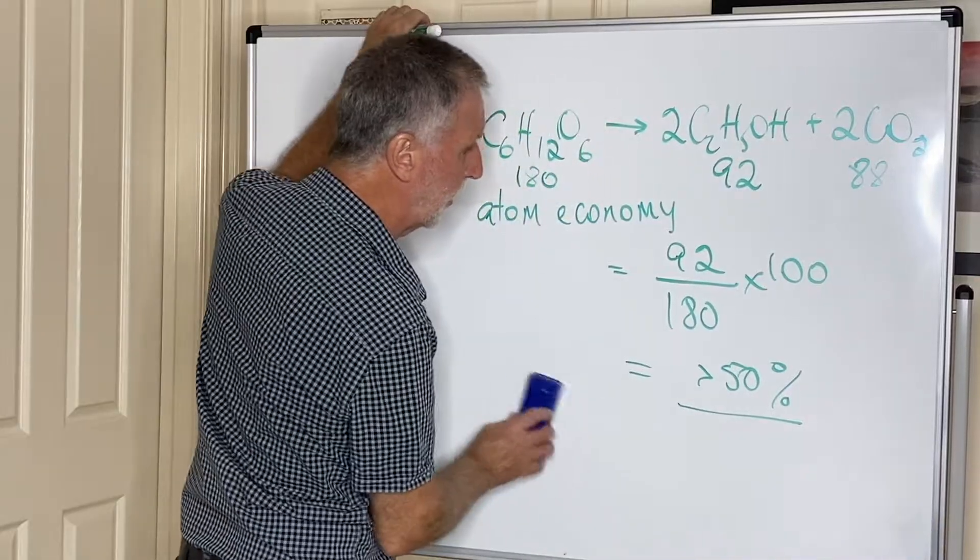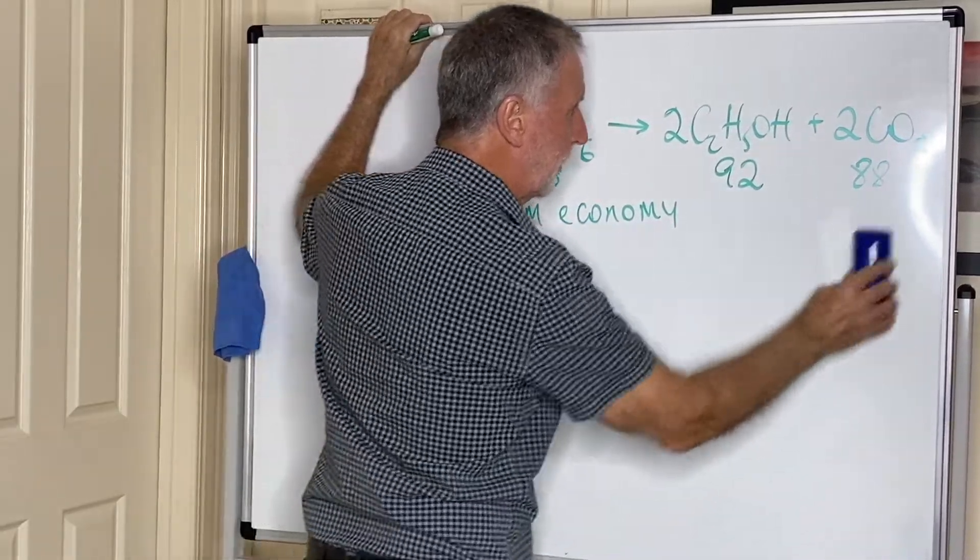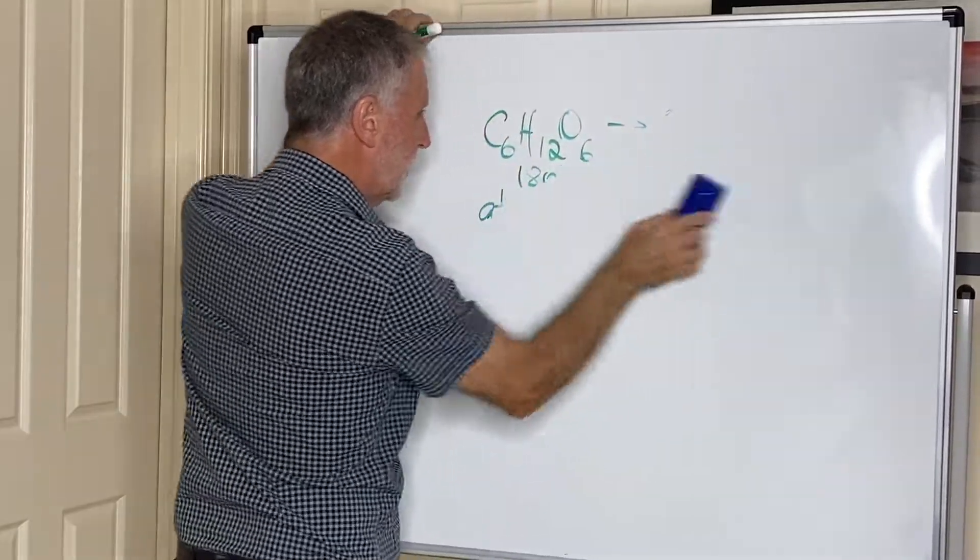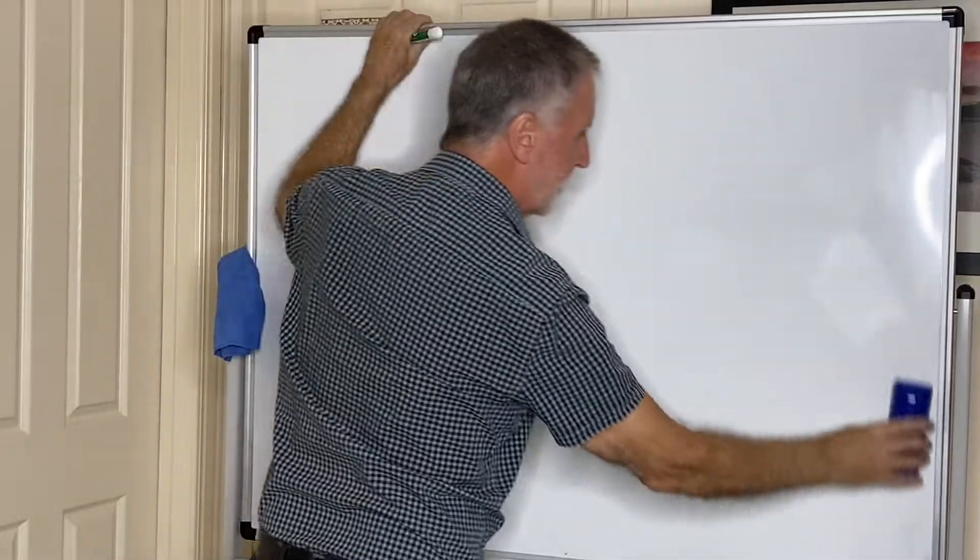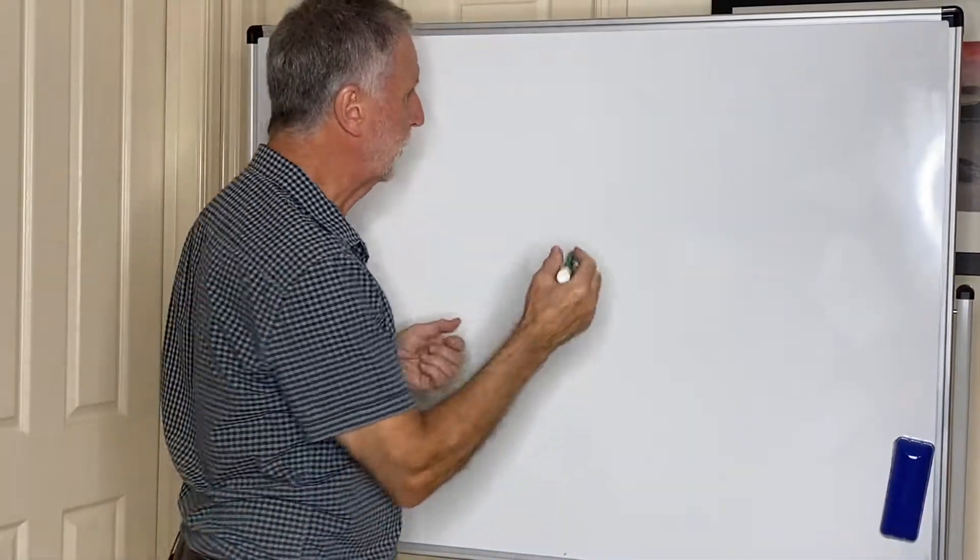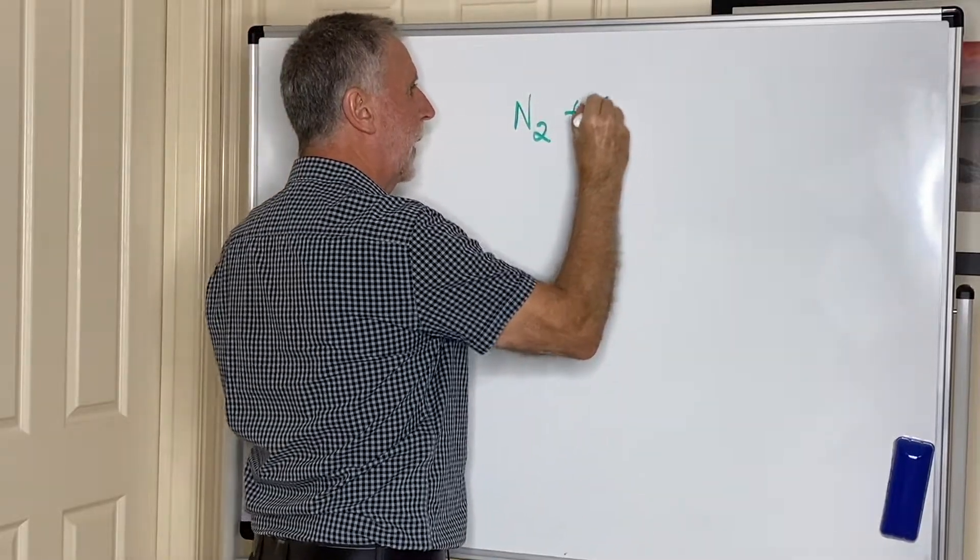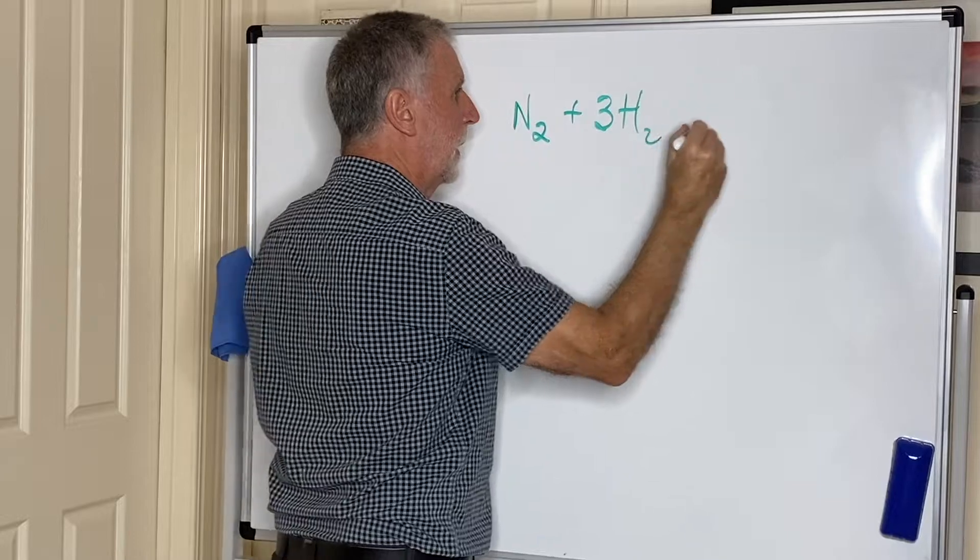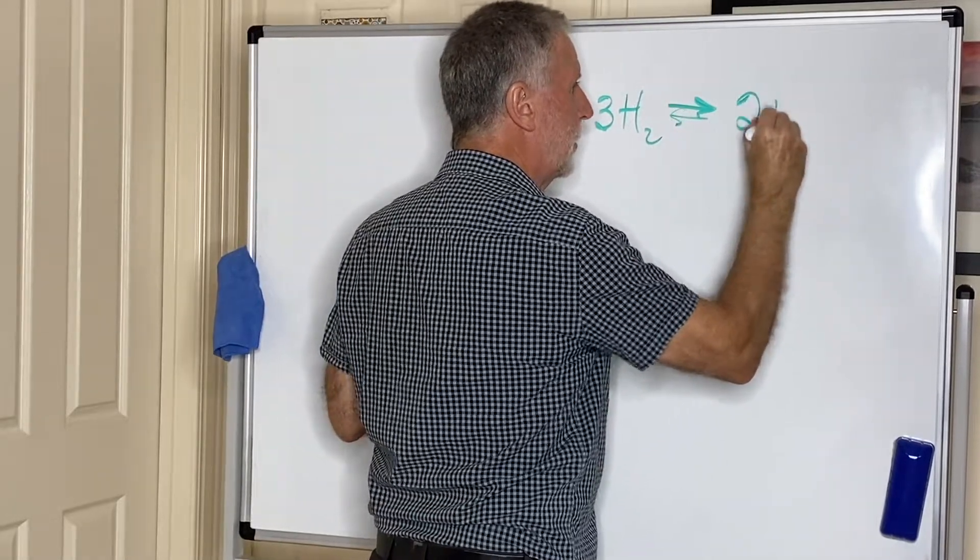However, the Haber process, which we met in an earlier video—can you remember the equation for the Haber process? The Haber process is very important in chemistry because it's used to make fertilizers. It's when we take nitrogen gas and hydrogen gas, and we turn it into—it's a reversible reaction—we turn it into ammonia.